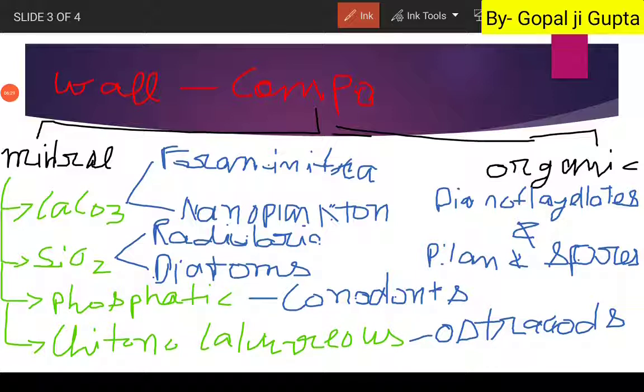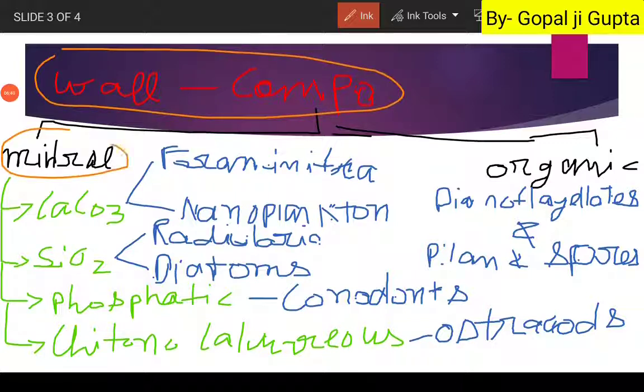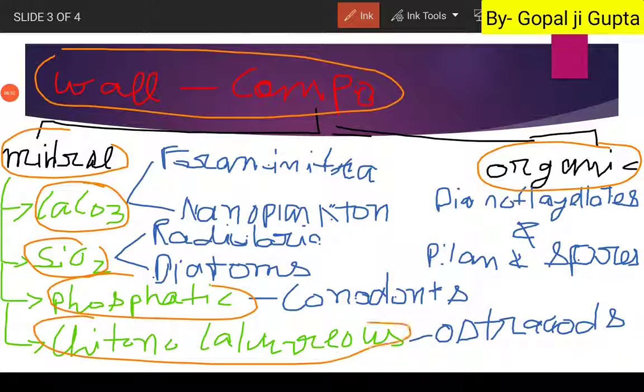So these are the general classification for the microfossils. Now let us summarize it. We have classified on the basis of wall composition. We have the mineral walled microfossils and organic walled microfossils. In the mineral wall we have the three types of minerals: calcareous, siliceous, phosphatic, and chitinocalcareous.